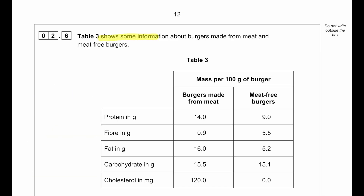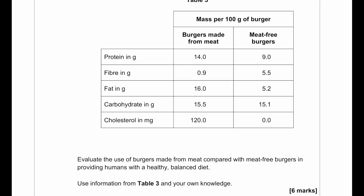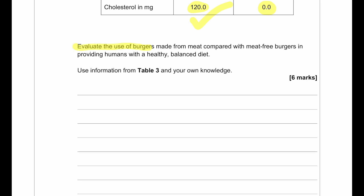Table 3 shows information about burgers made from meat and meat-free burgers. Meat burgers contain higher protein and higher fat. Meat-free burgers have higher fibre. Both have similar carbohydrate content. Meat burgers have very high cholesterol at 120 mg, whereas meat-free burgers have zero cholesterol.